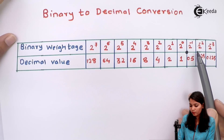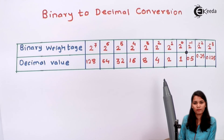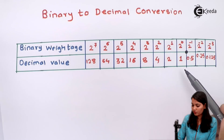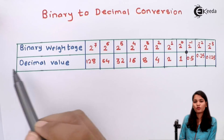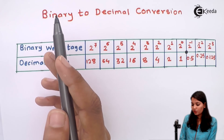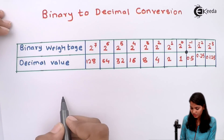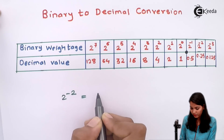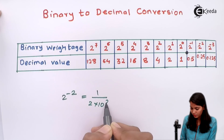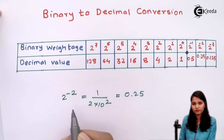Now let's see what 2 raised to minus 1 means. 2 raised to minus 1 means 1 divided by 2, which is one-half, so that gives 0.5. Now for 2 raised to minus 2: that means 1 divided by 2 squared, which gives 0.25.